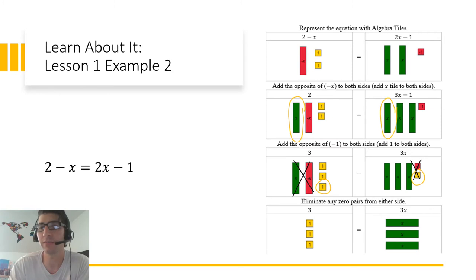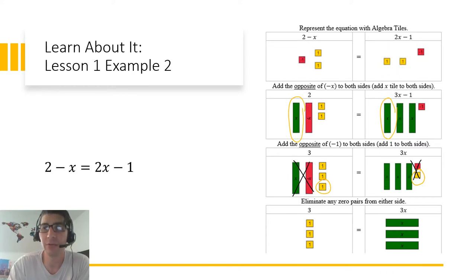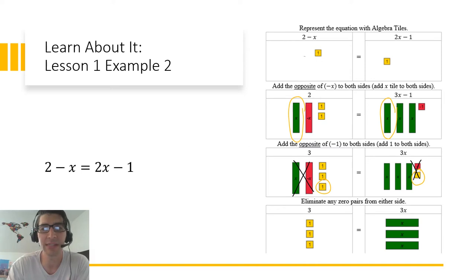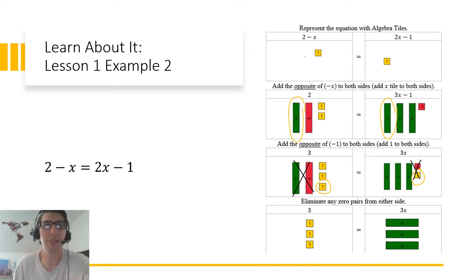On the left-hand side, x and negative 1x add to zero. On the right-hand side, negative 1 and positive 1 add to zero. I'm left with 3 on the left and 3x on the right, meaning each green x is worth one unit. I can verify this by substituting x equals 1 back into the original equation — replacing all x tiles with 1 and opposite-of-x tiles with negative 1 — and I'm left with the true statement 1 equals 1.